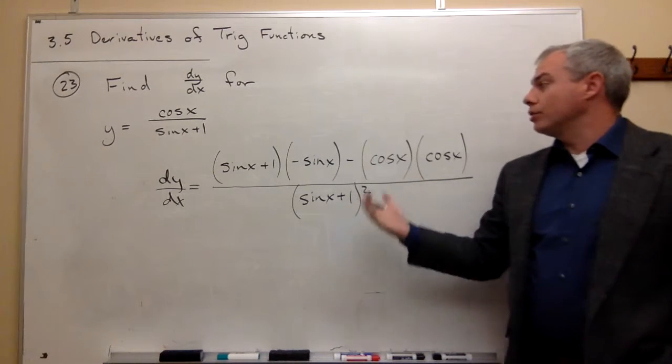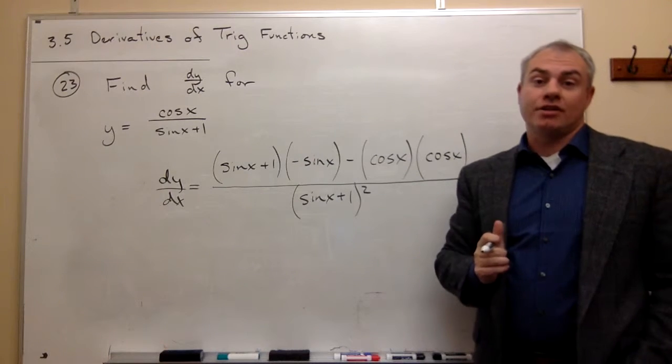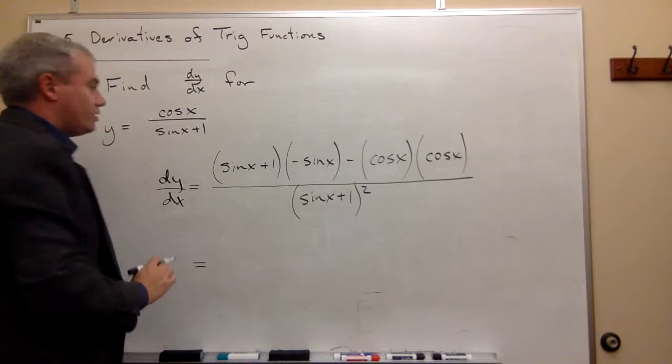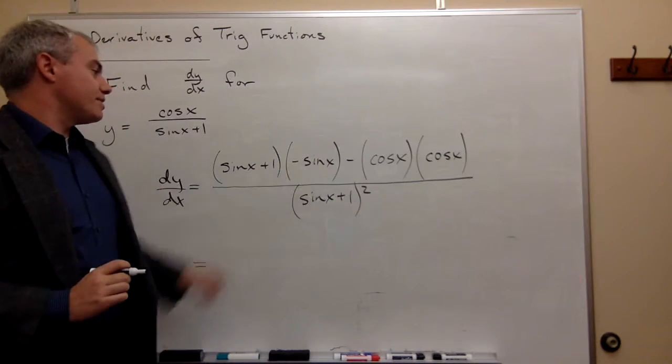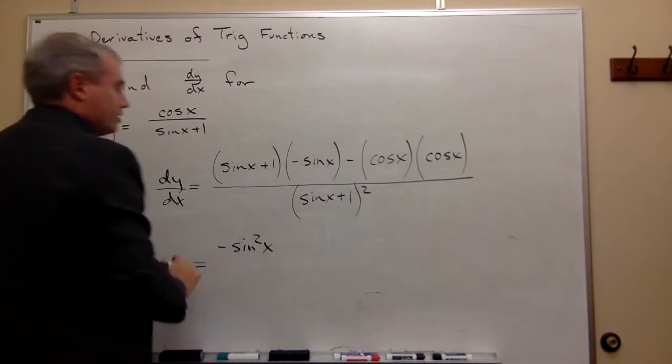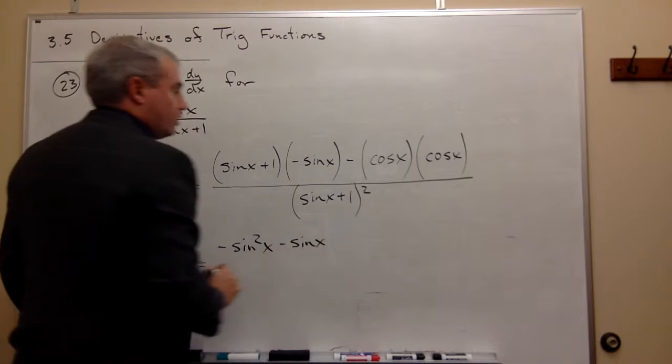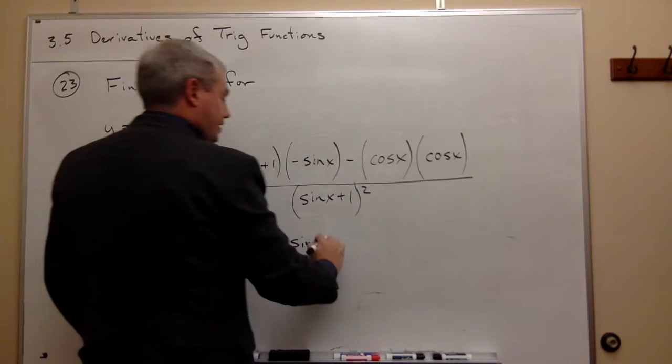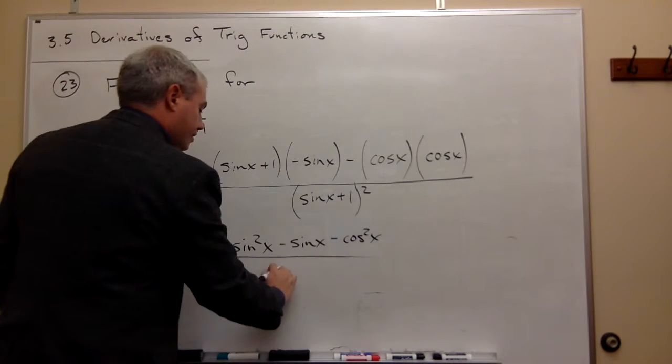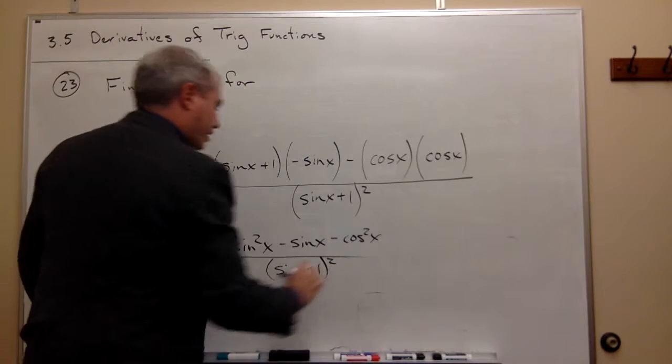And now I could multiply this out. I could probably get some simplification. Let's see what we would get real quick. So this is sine of x times negative sine of x is negative sine squared x. And then I get minus sine x minus cosine squared x divided by sine x plus 1 squared.